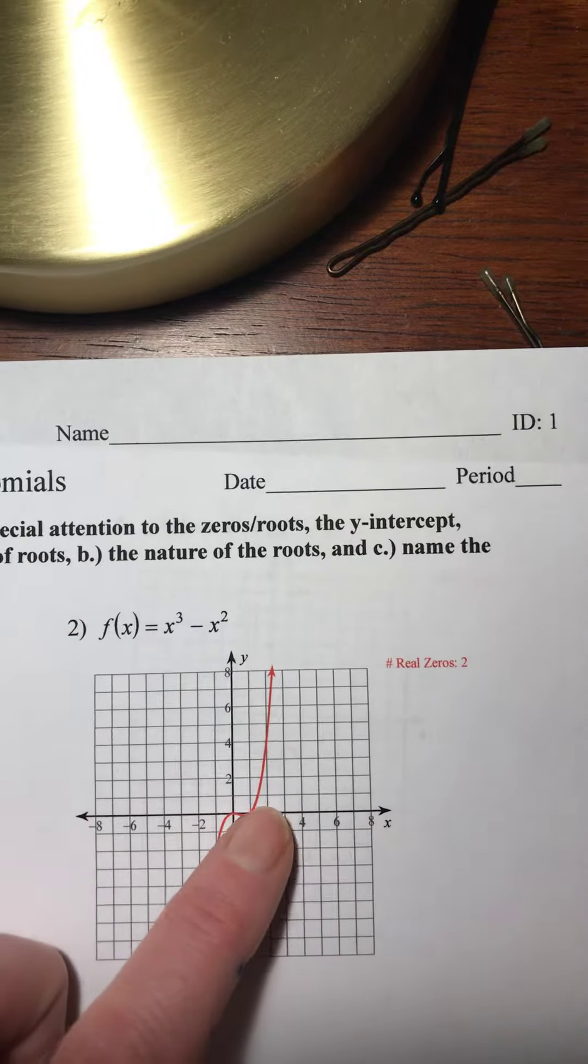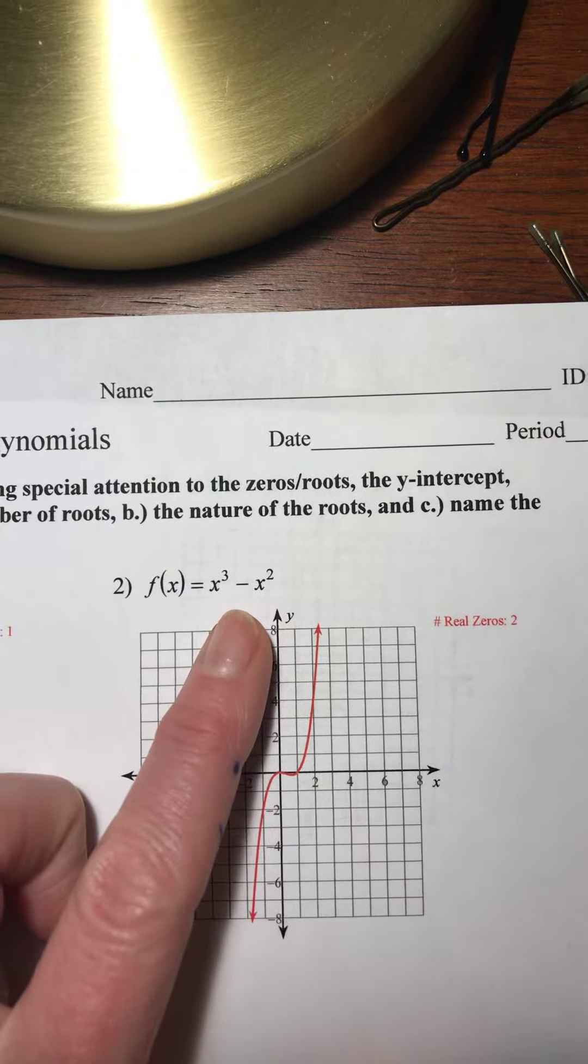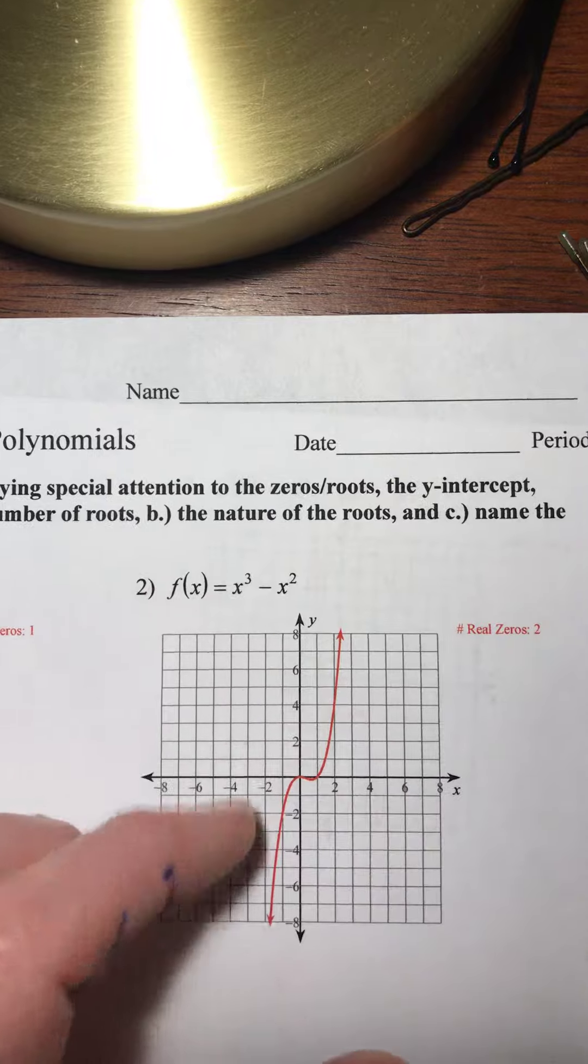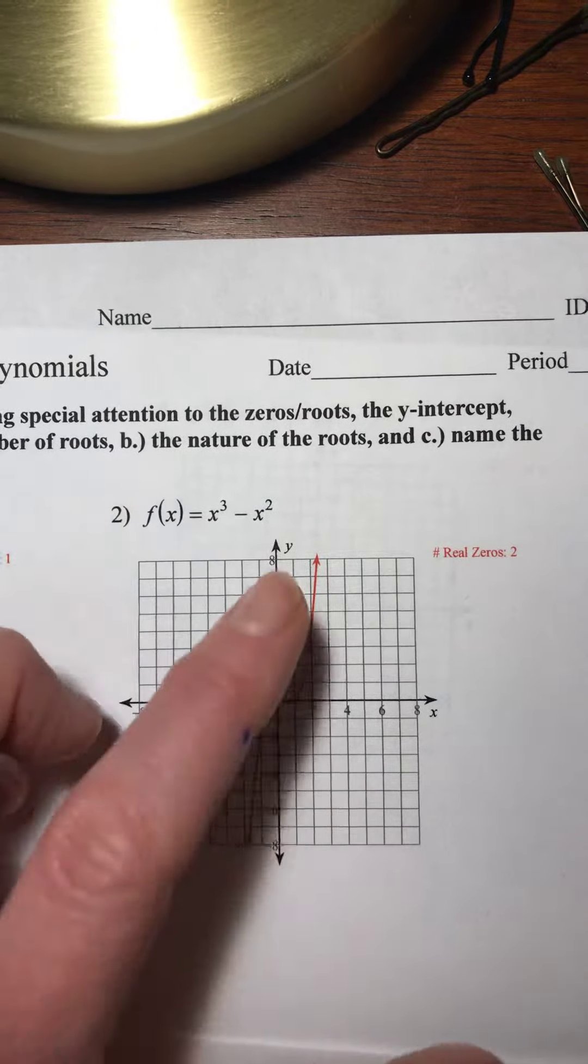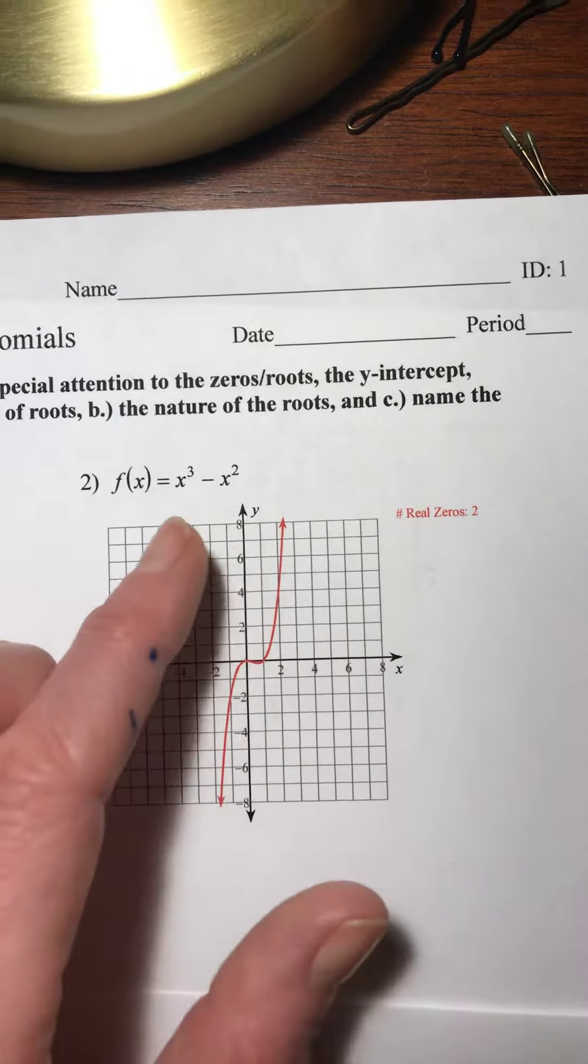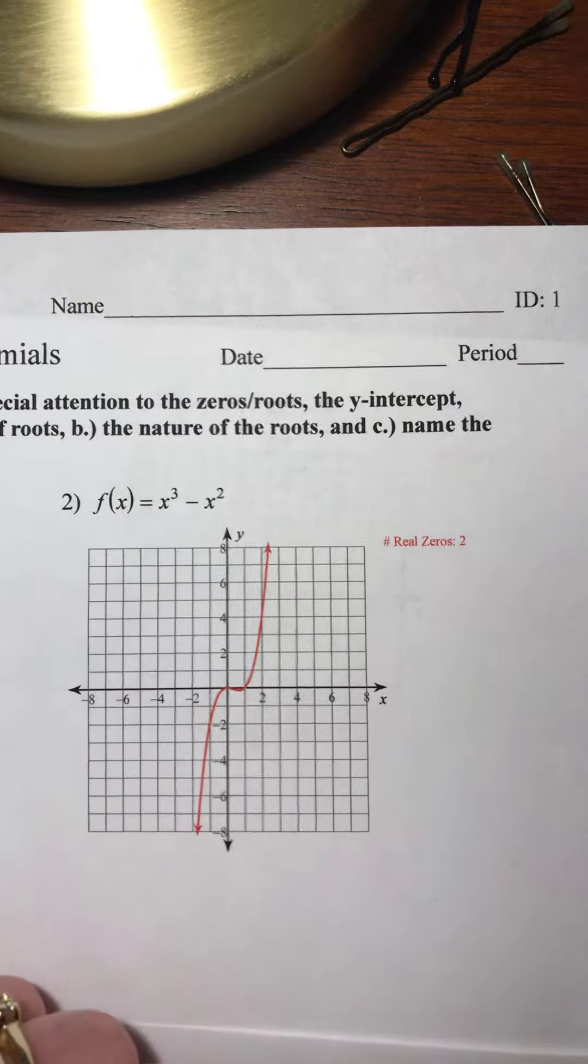So that balance is the result of when we factor this out, we're going to have a multiplicity of two somewhere along the way. So there are no imaginary roots in this case, just two real roots.